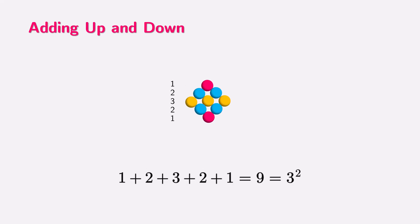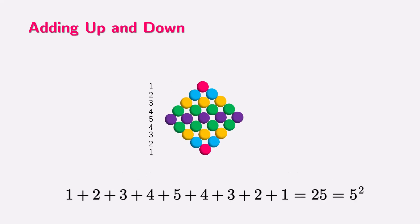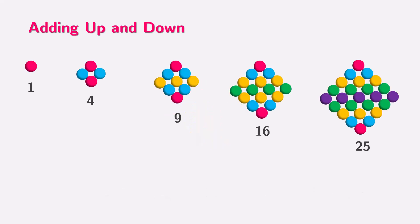1 plus 2 plus 3 plus 2 plus 1 equals 9, which is 3 square. 1 plus 2 plus 3 plus 4 plus 3 plus 2 plus 1 equals 16, which is 4 square. 1 plus 2 plus 3 plus 4 plus 5 plus 4 plus 3 plus 2 plus 1 equals 25, which is 5 square.